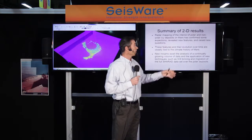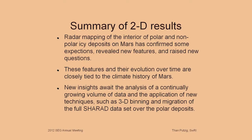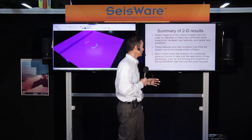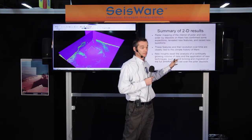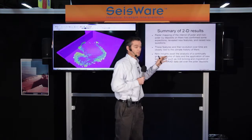To summarize the 2D work from earlier: we're able to confirm a bunch of expectations from just looking at the surface features, we've revealed a bunch of new features, and we've raised some new questions about the nature of the layer deposits. These features and how they evolve over time are closely tied to the climate history, and we feel that with more data volume — which we've now acquired — we can do a 3D analysis and find out a lot of new and interesting things about the polar layer deposits.